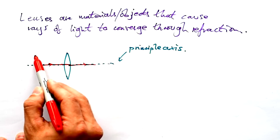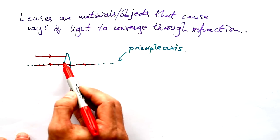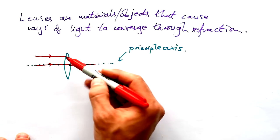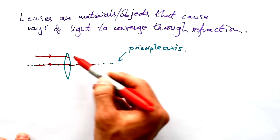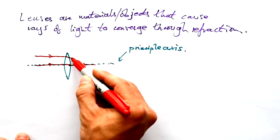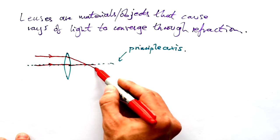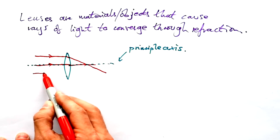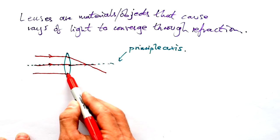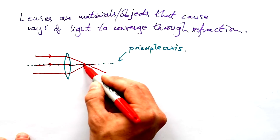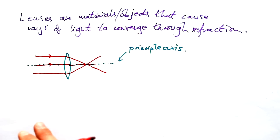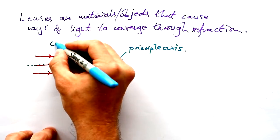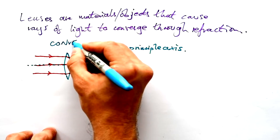What about a ray hitting the lens off-center? Because we have the curve of the block, it gets refracted once as it enters and again as it exits, ending up going out in a different direction. A ray on the other side gets refracted as it goes in and again as it goes out, and we end up with this convergence — the light rays all meeting at the same point. This is a convex lens.